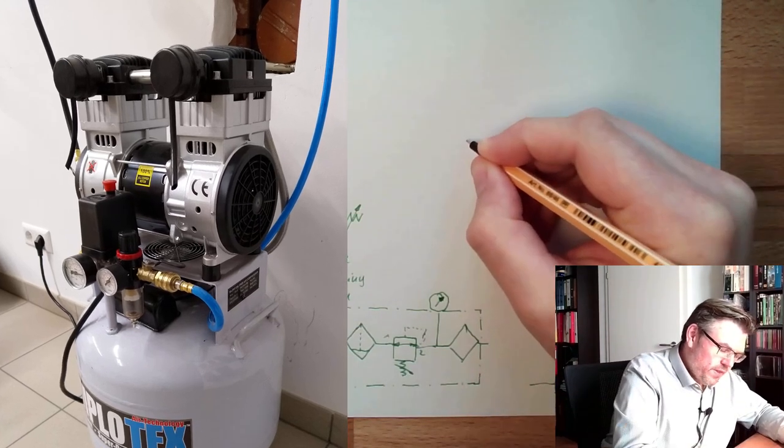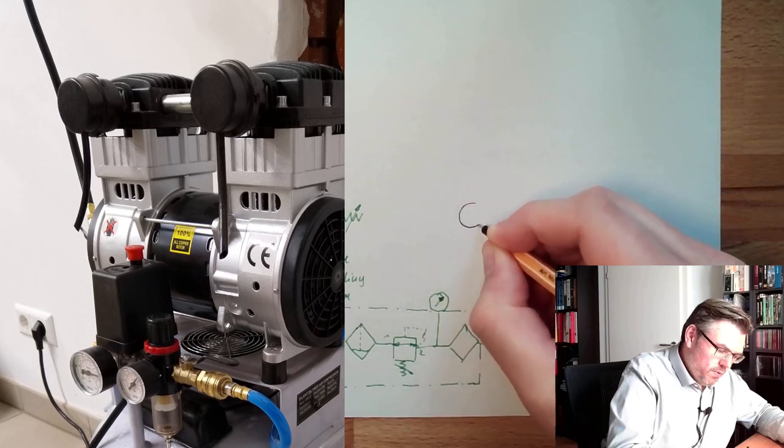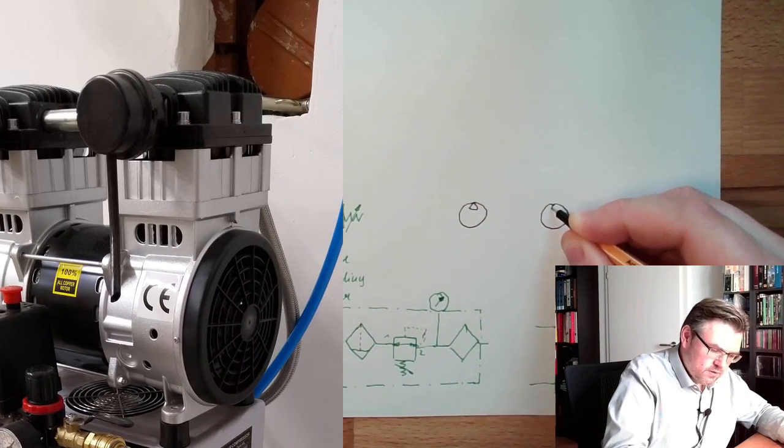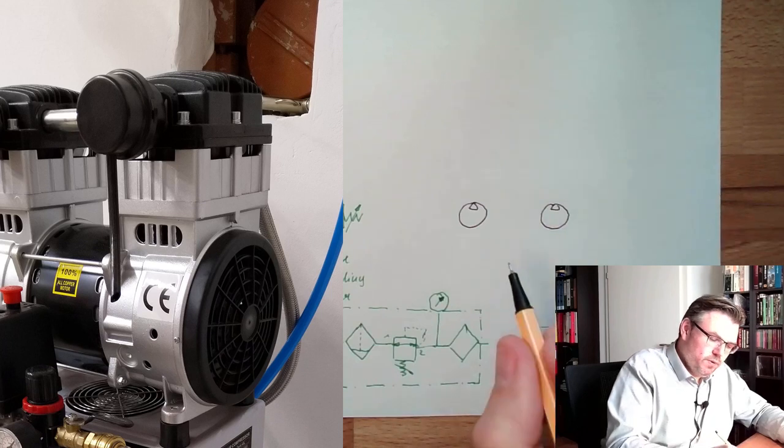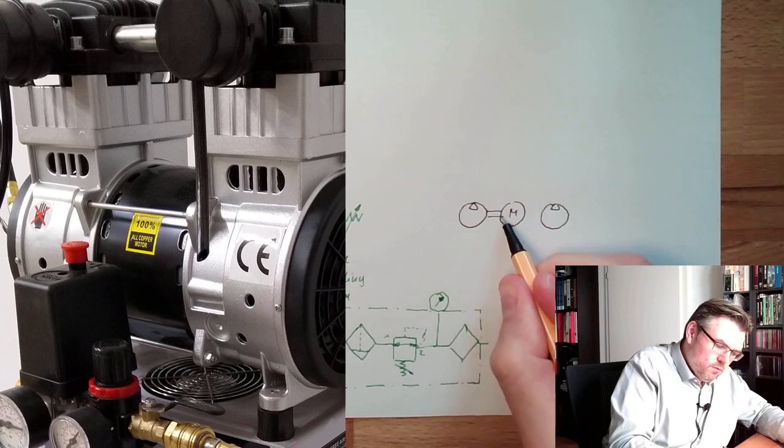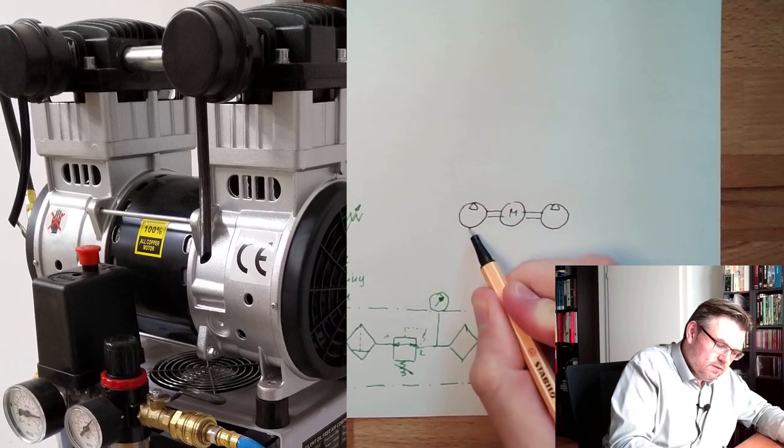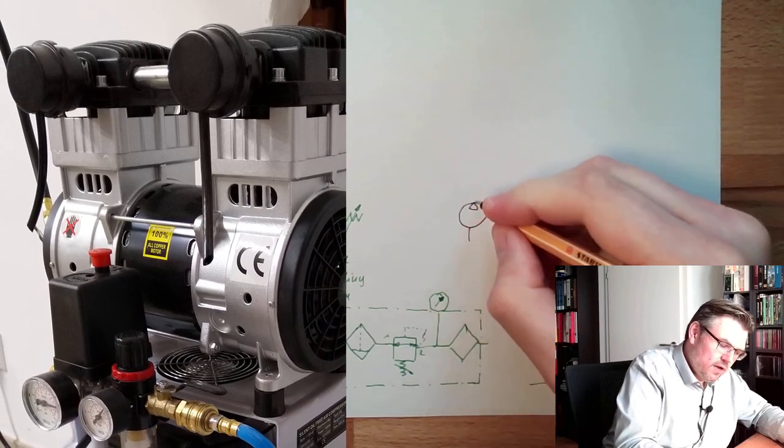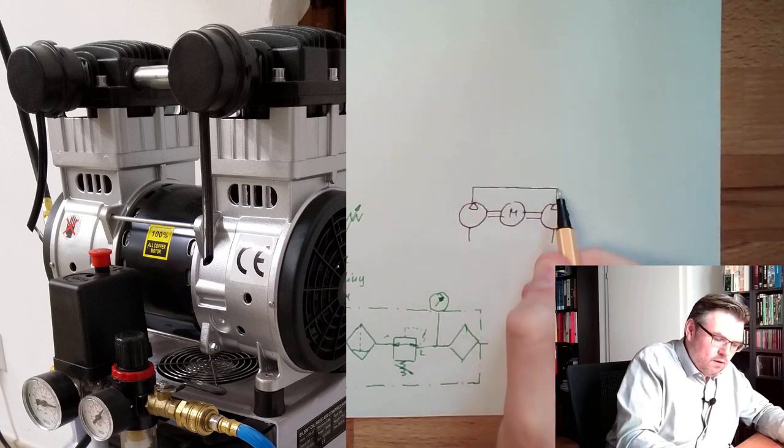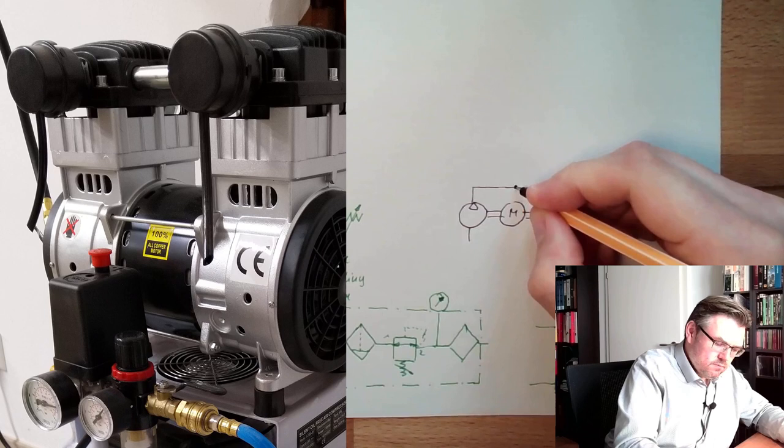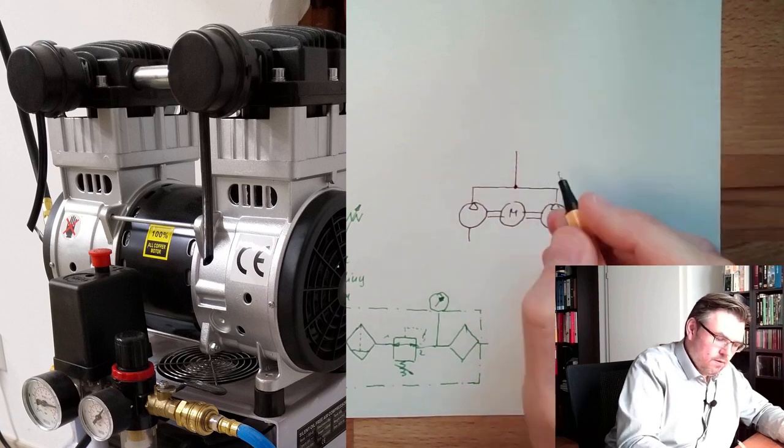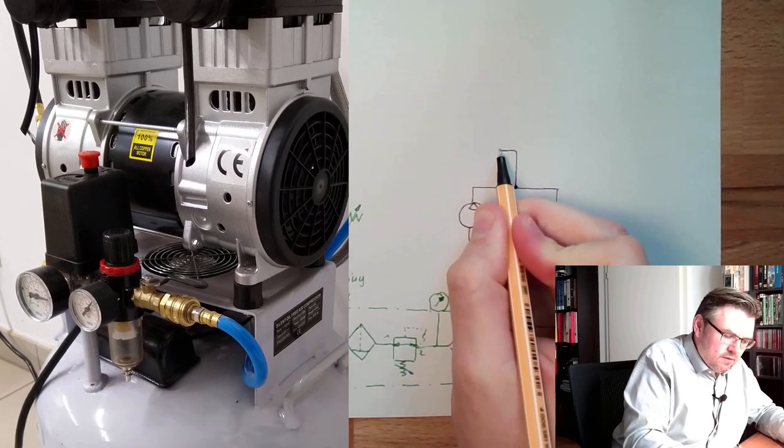So there is one compressor. There is also another compressor. Because there are two piston compressors inside. In the middle there is the motor, which is driving the two compressors. So here we have the suction line. Those two are then combined. And there is the pressure tank.